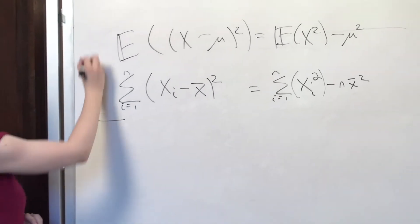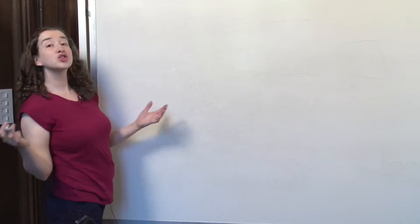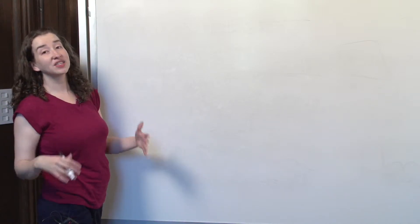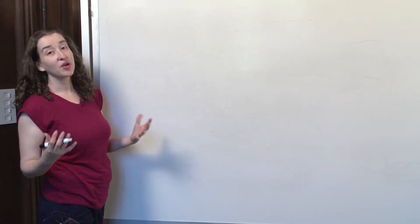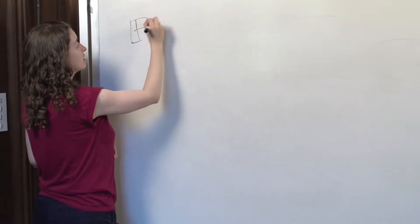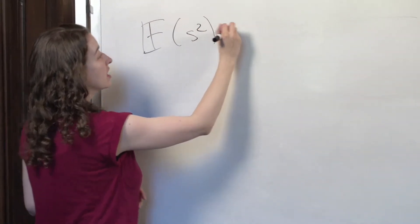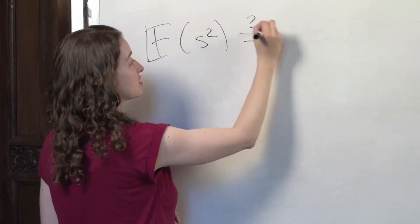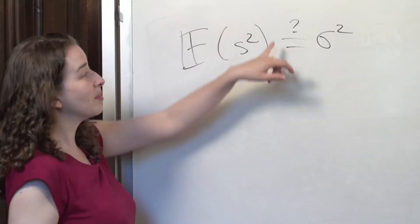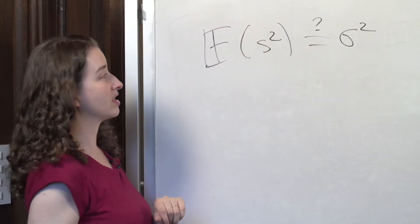We will use these two ideas in order to show that s squared is unbiased for sigma squared. What we have to show is that the expected value of s squared is equal to sigma squared. I'm putting a question mark here — even though I know this is true — because this is what we're trying to show.